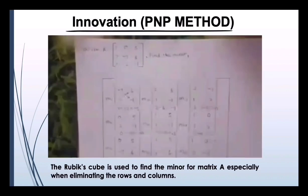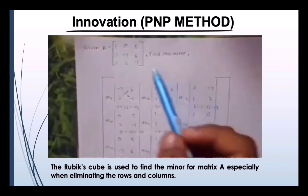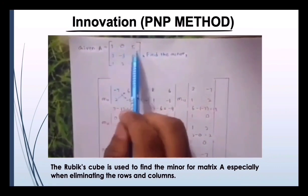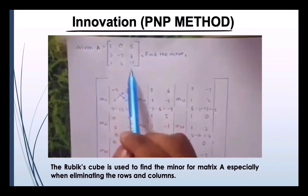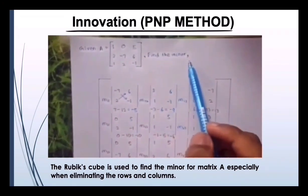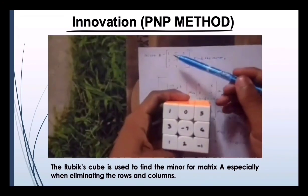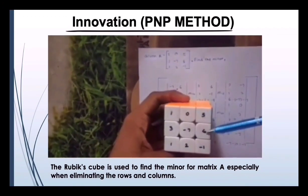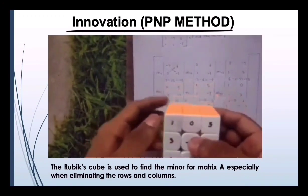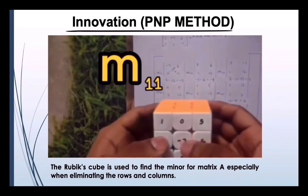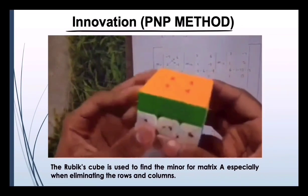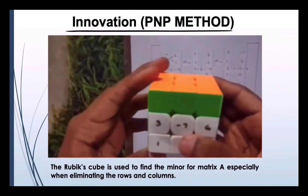This is the innovation, which is the PNP method. Here we have a 3x3 matrix where we have 3 rows and 3 columns, and we have to find the minor. First of all, we are going to insert the numbers into the squares of the alubicube. For the minor of the first row and first column, we can use this alubicube and rotate the first row to the right and the first column upward.